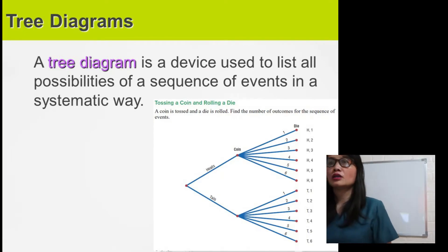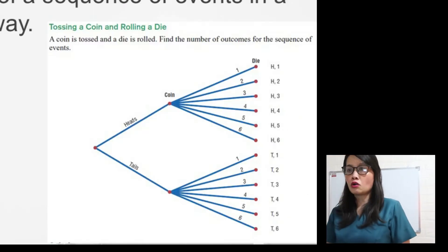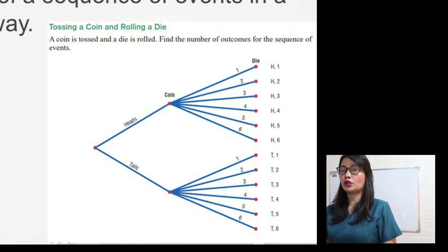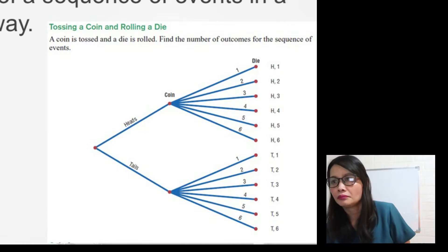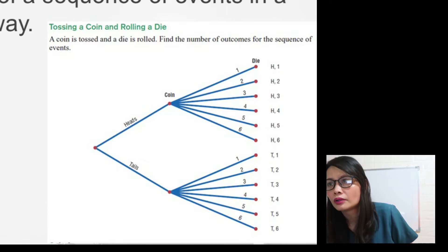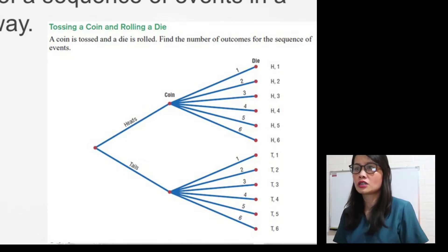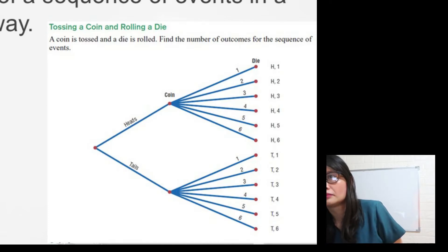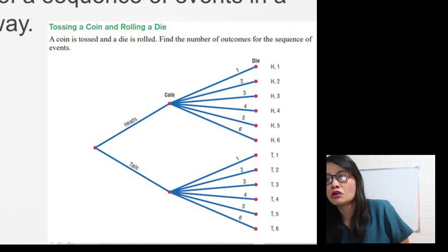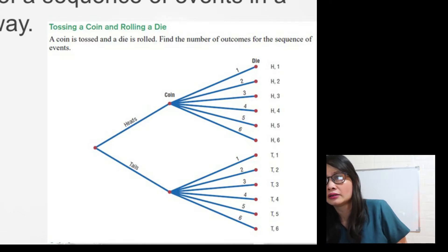For example, tossing a coin and rolling a die. A coin is tossed and a die is rolled — find the number of outcomes for the sequence of events. For a coin, we have head and tails. If it is head, for the die, we have six choices: 1, 2, 3, 4, 5, 6.